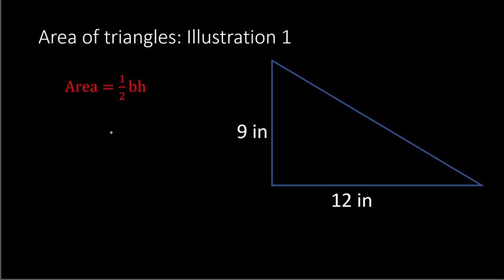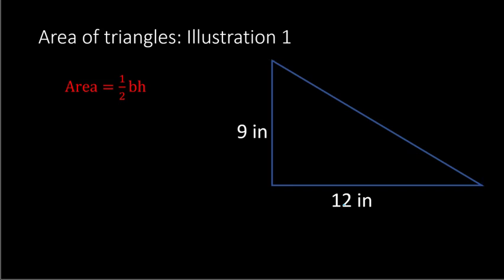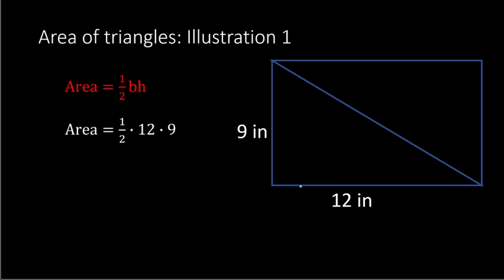To illustrate why it's 1 half, imagine we have a triangle with a height of 9 inches and a base of 12 inches. If you duplicate this triangle and place it on top, you now have a complete rectangle, which is a parallelogram. The original triangle is 1 half of the rectangle. A rectangle is base times height, 9 times 12, but for the triangle it's 1 half of that: 1/2 × 12 × 9. 1 half of 12 is 6, and 6 times 9 is 54, so the area is 54 inches squared.